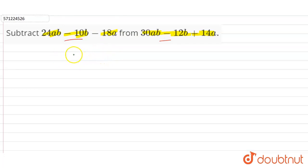So write 30ab minus 12b plus 14a minus. This is one algebraic expression we have to subtract